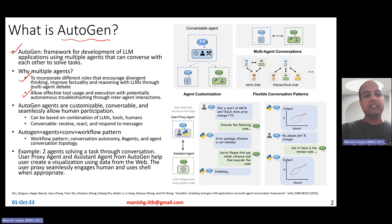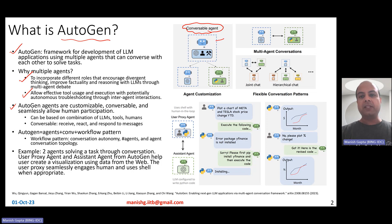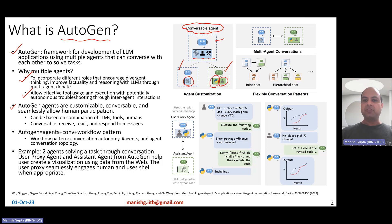In the Autogen framework, the agents are customizable, conversable, and they seamlessly allow human participation. Conversable basically means that the agents can receive messages, react to messages, and respond to messages. Also, an agent can make use of either LLMs, humans, or tools, or a combination of those. For example, one agent makes use of LLMs; another makes use of human input and Python code execution.